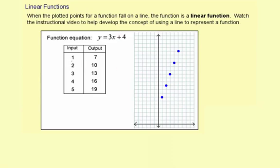What if you had, say, 1.5 as an input instead of 1 or 2? Well, if you input a 1.5, multiply by 3, and then add 4, it's actually going to be halfway in between these two points.